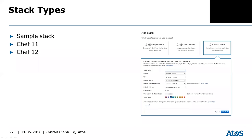There are three different types of stacks. You have the sample stack, which lets you deploy something like a Node.js application. You have Chef 12, where you define your own cookbooks or use community cookbooks. And you have Chef 11, where you can use predefined cookbooks that AWS offers.